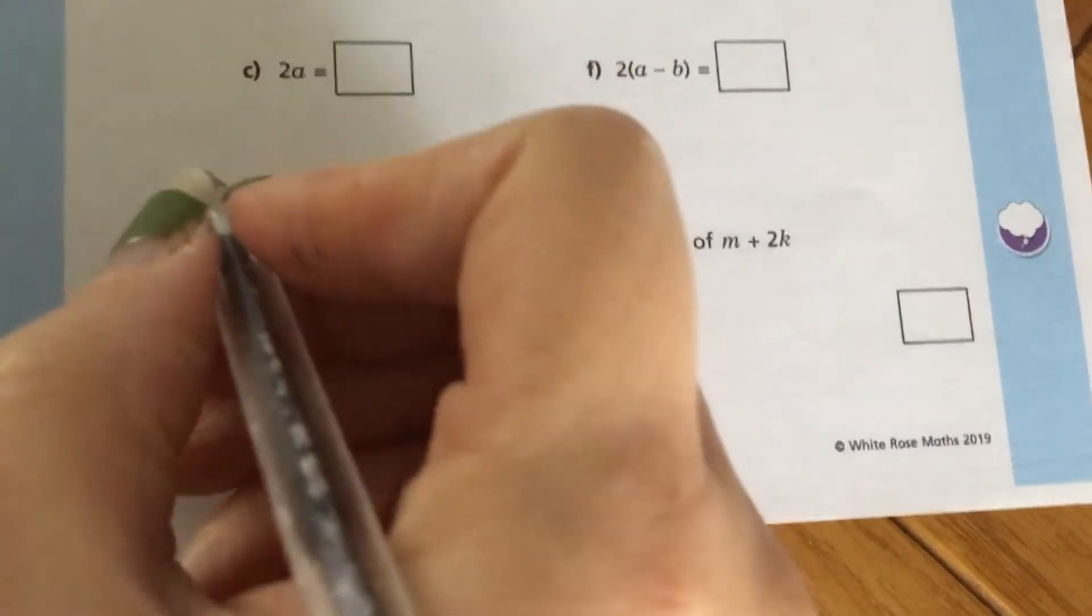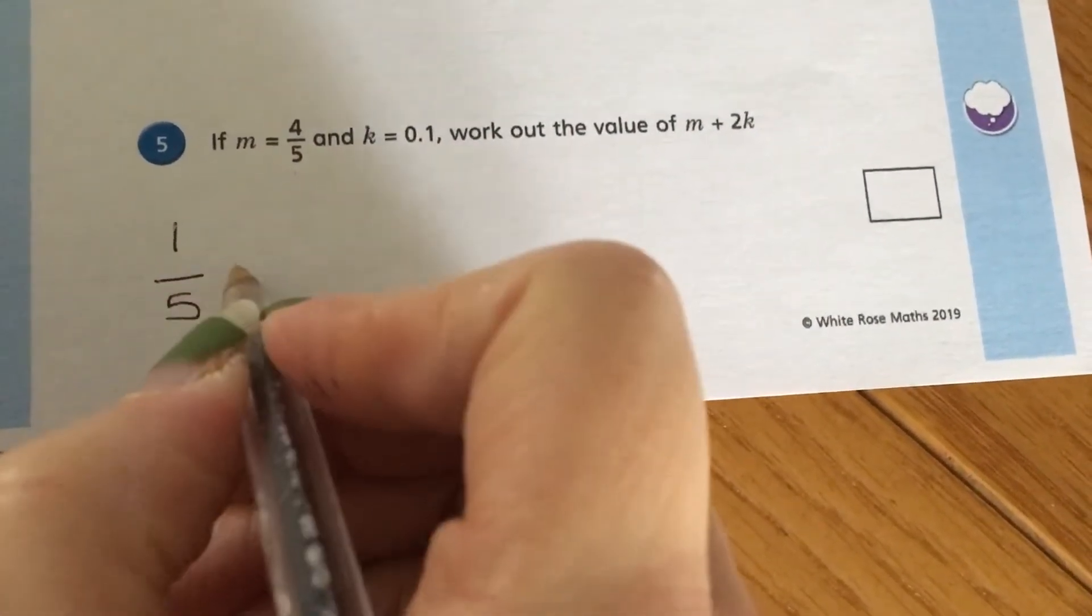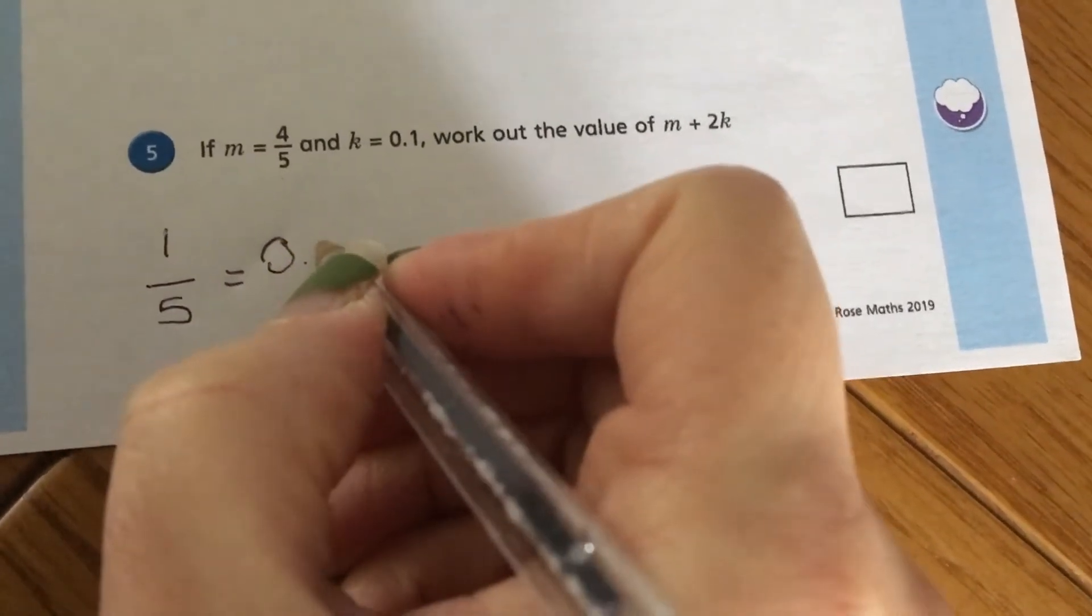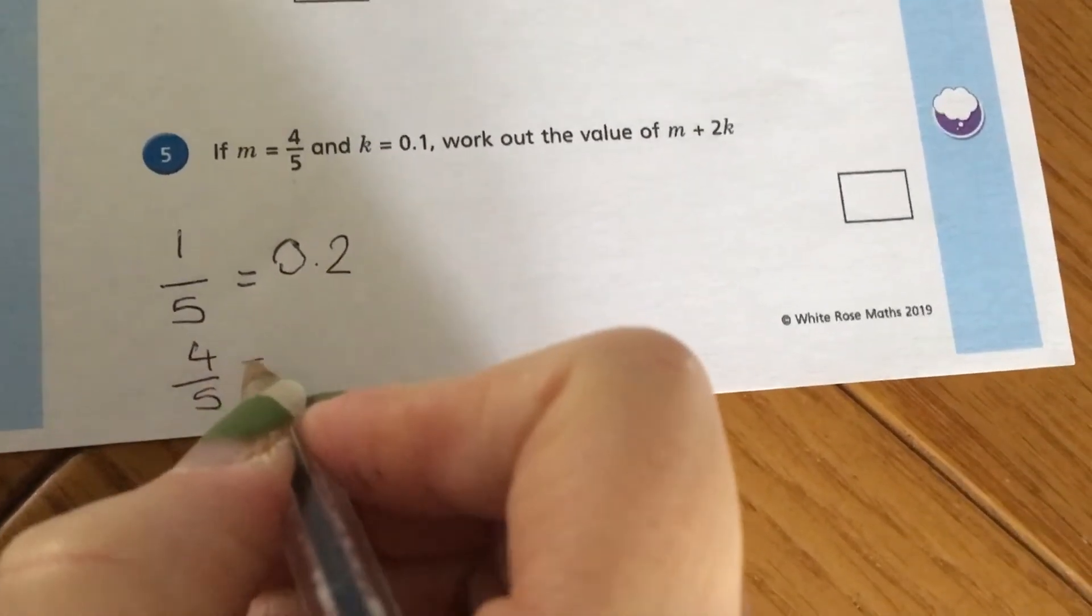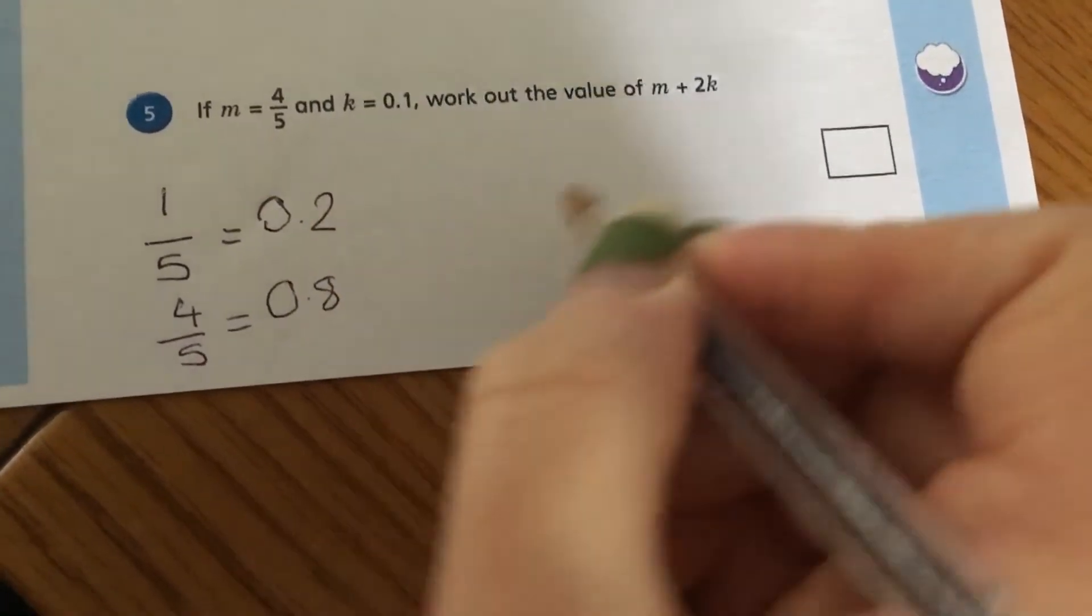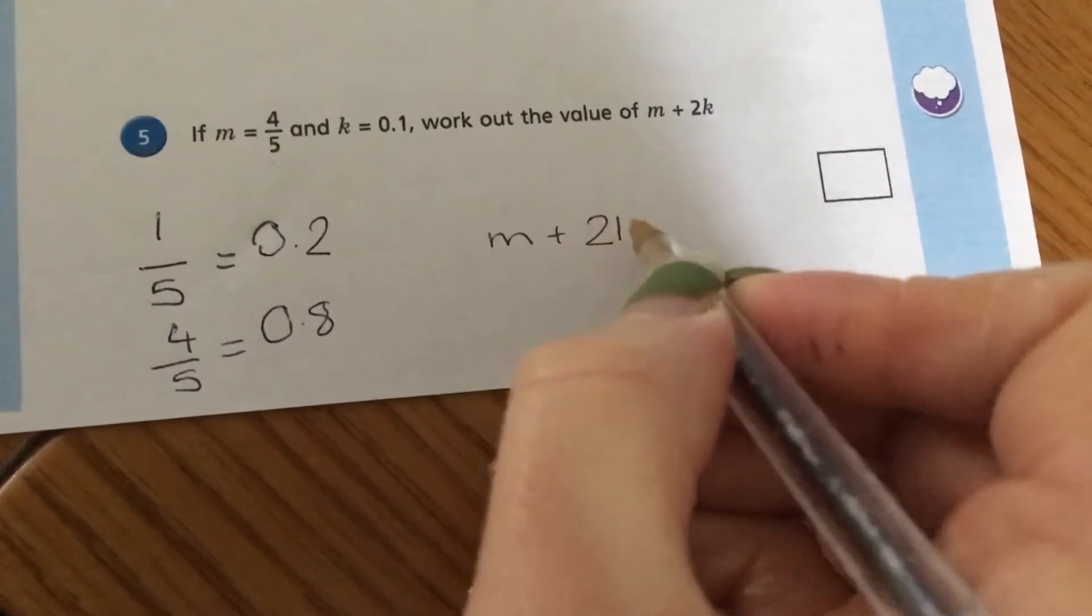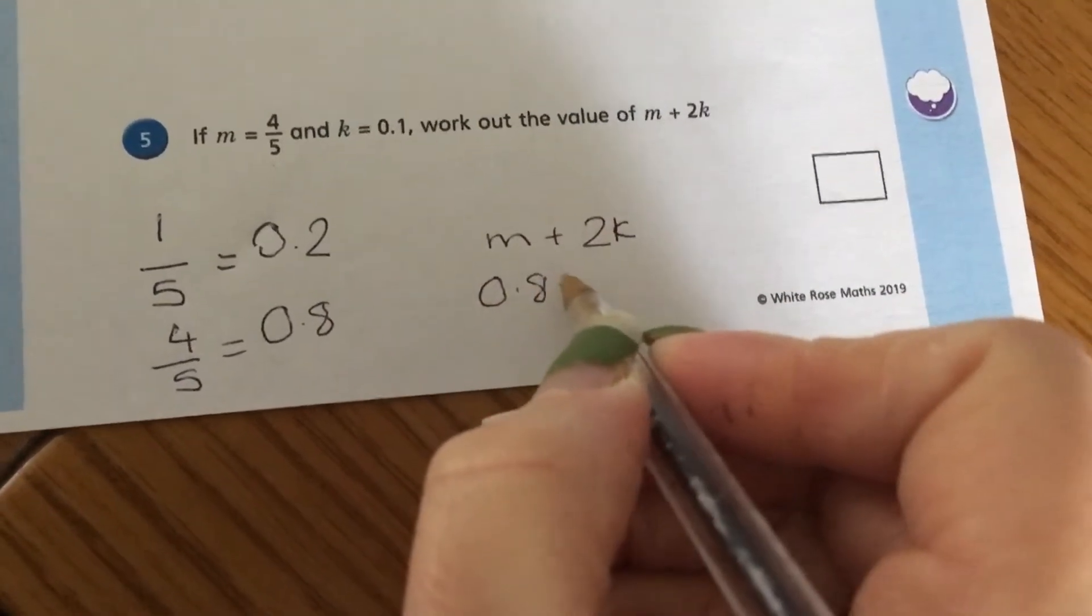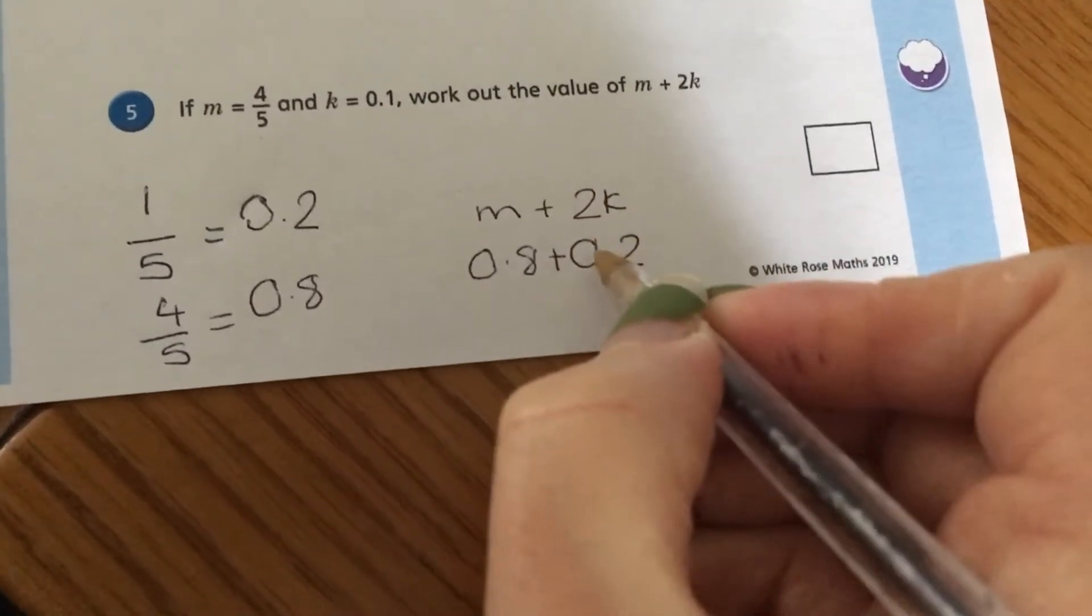So last week we learned that one-fifth is the decimal equivalent of 0.2. So then we know that four-fifths is the decimal equivalent of 0.8 because it's four times bigger. So add two lots of 0.1, so that's 0.2.